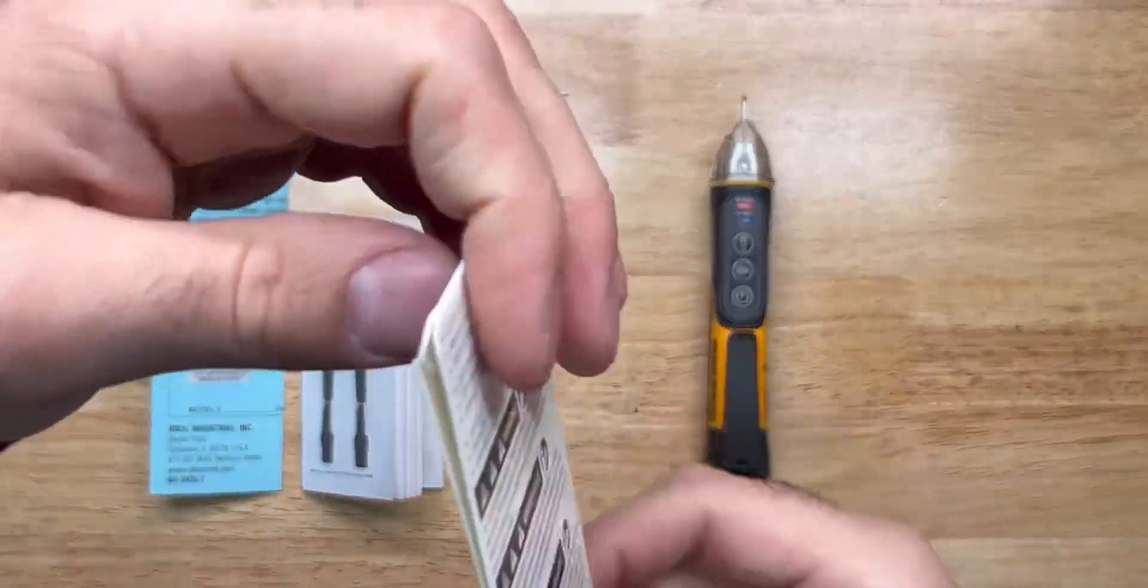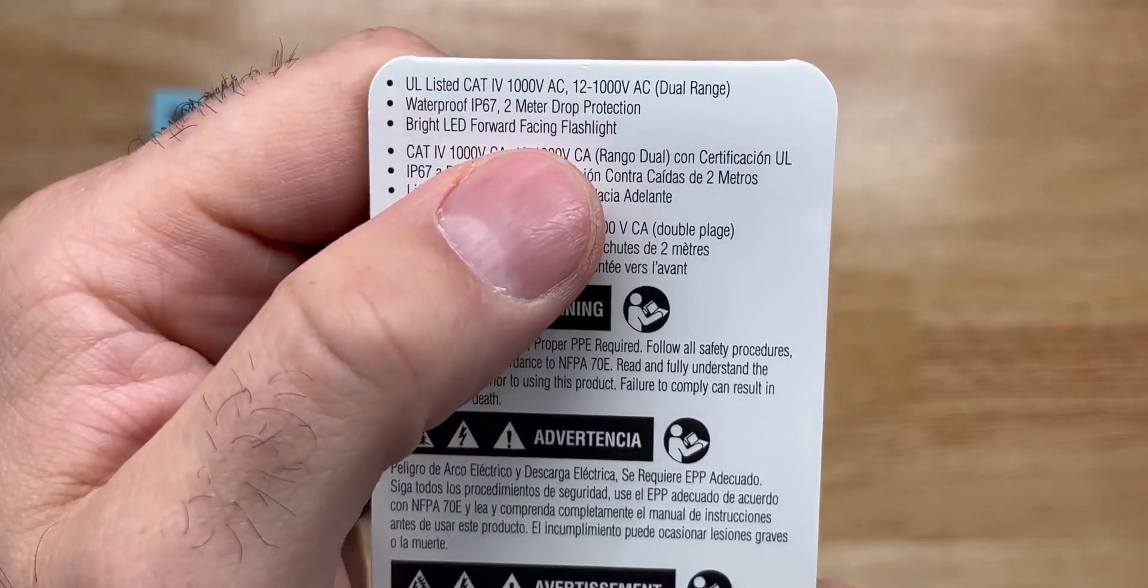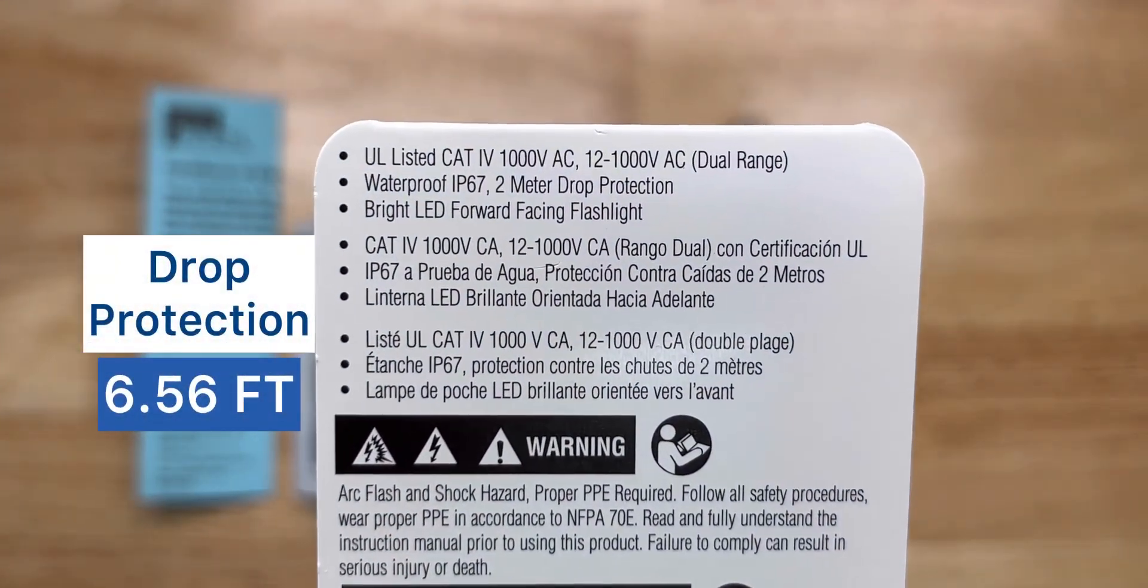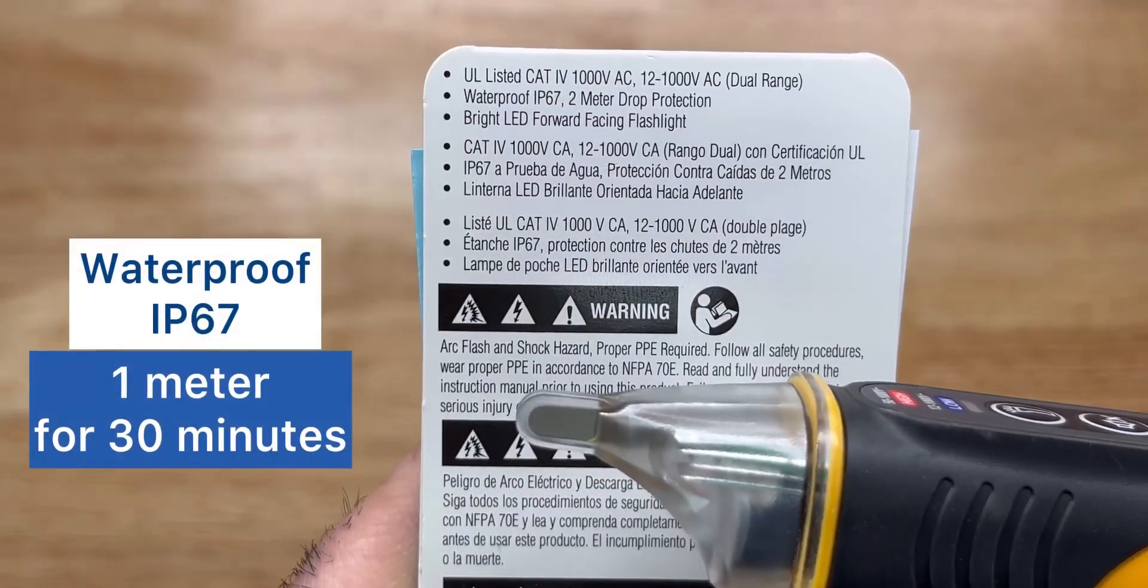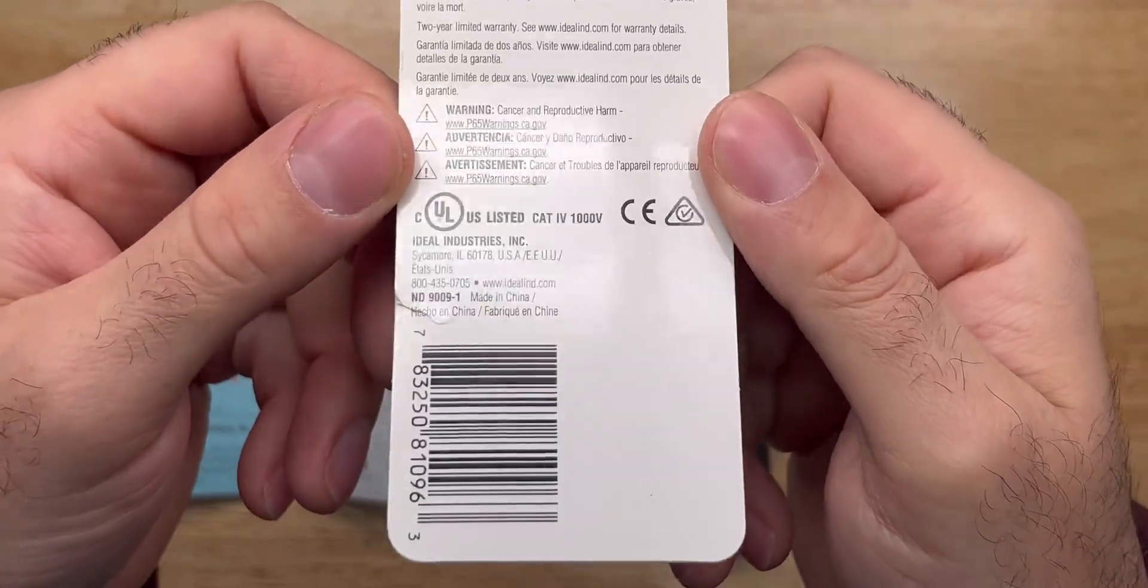It does say that it has a two meter drop protection. I'm not going to drop that. IP67 and the warning labels, barcode and where it's made.